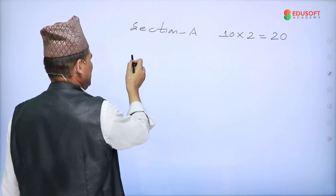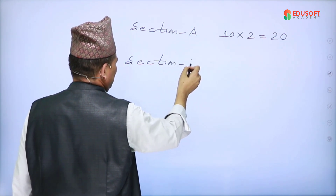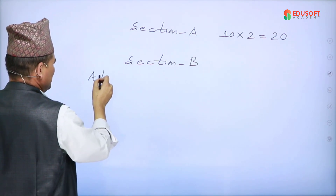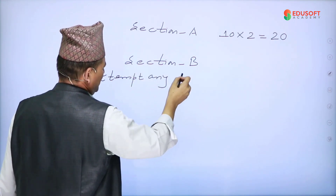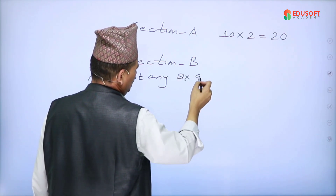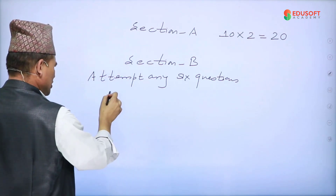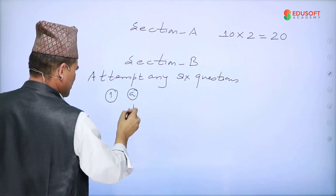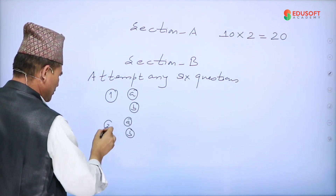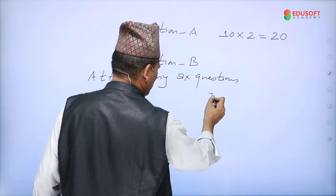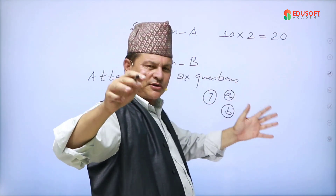Section B: attempt any six questions out of seven. Each question has parts A and B — questions one through seven. Out of these seven questions, you need to attempt any six.